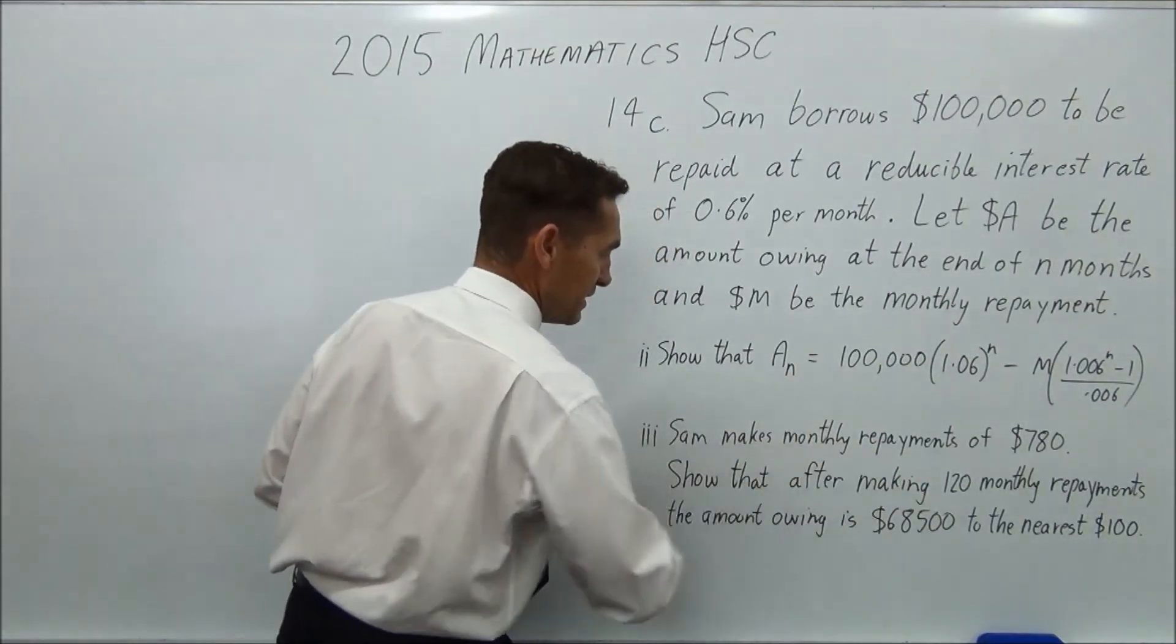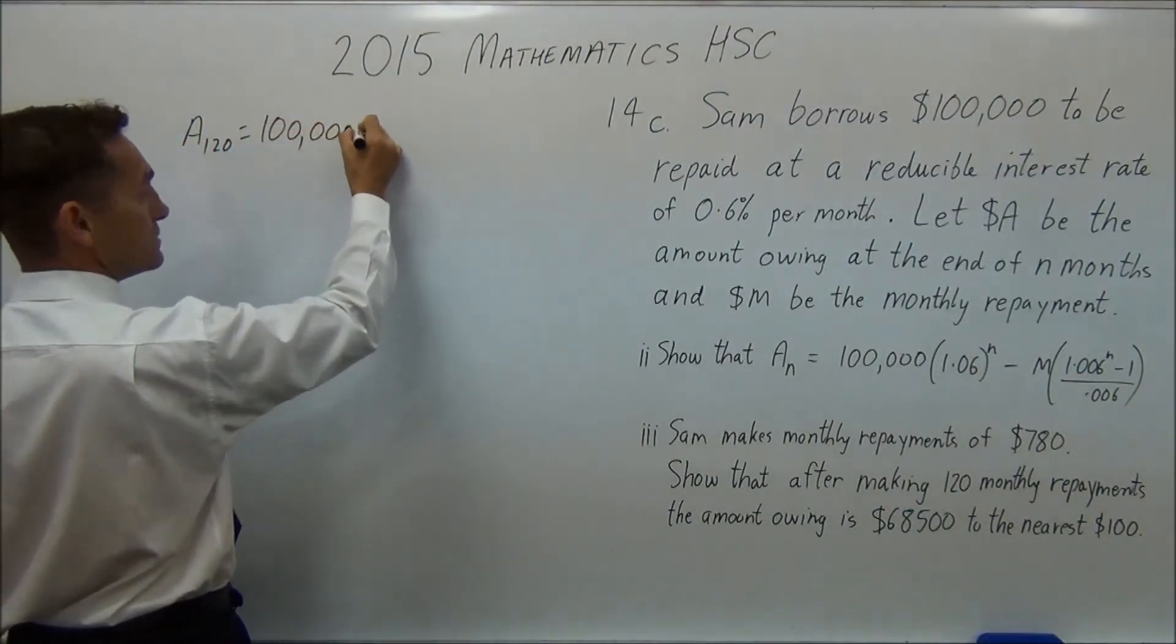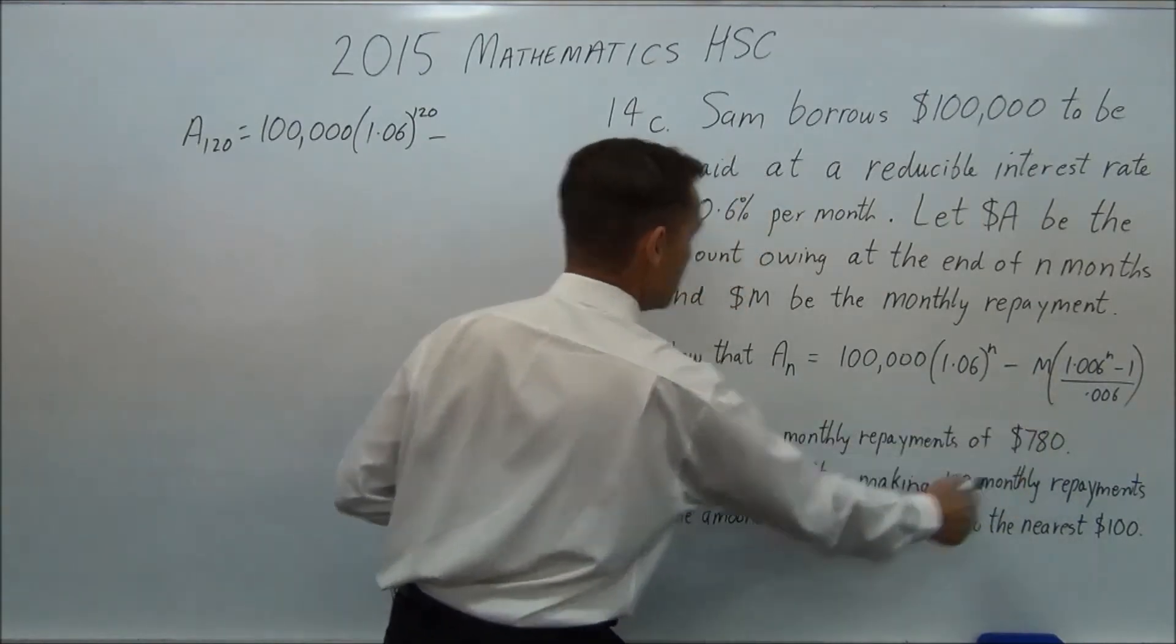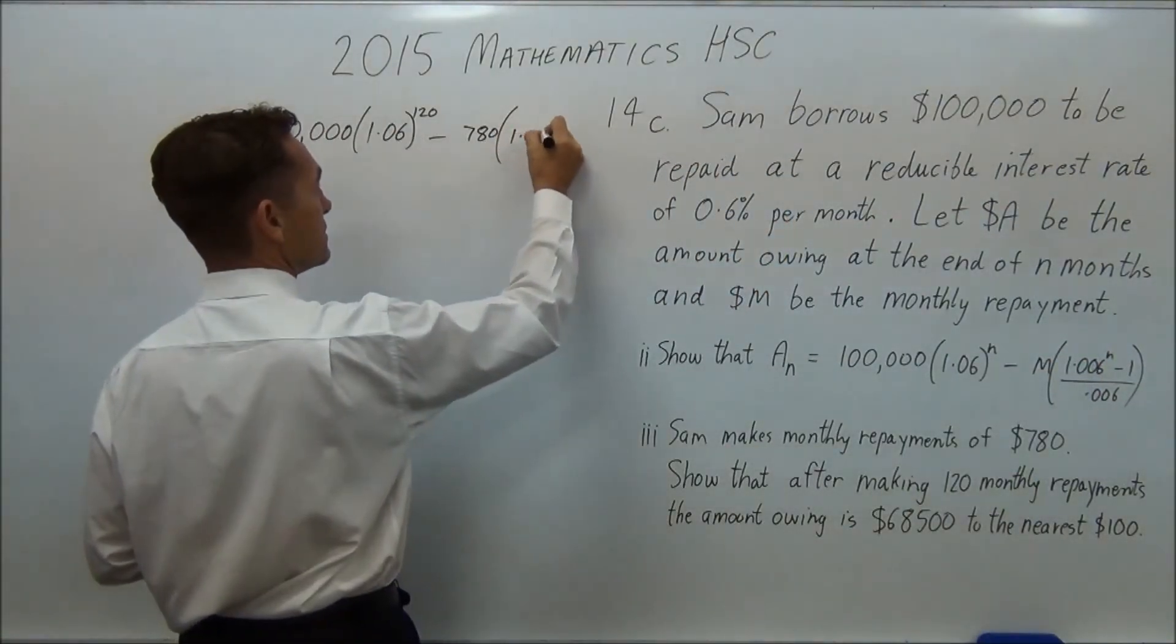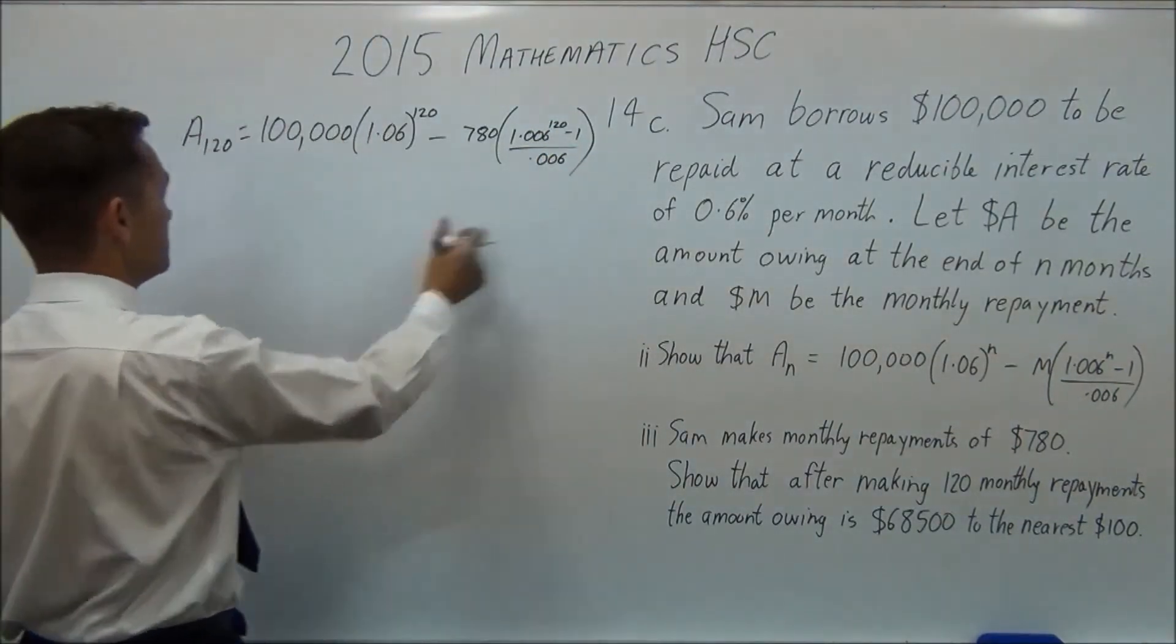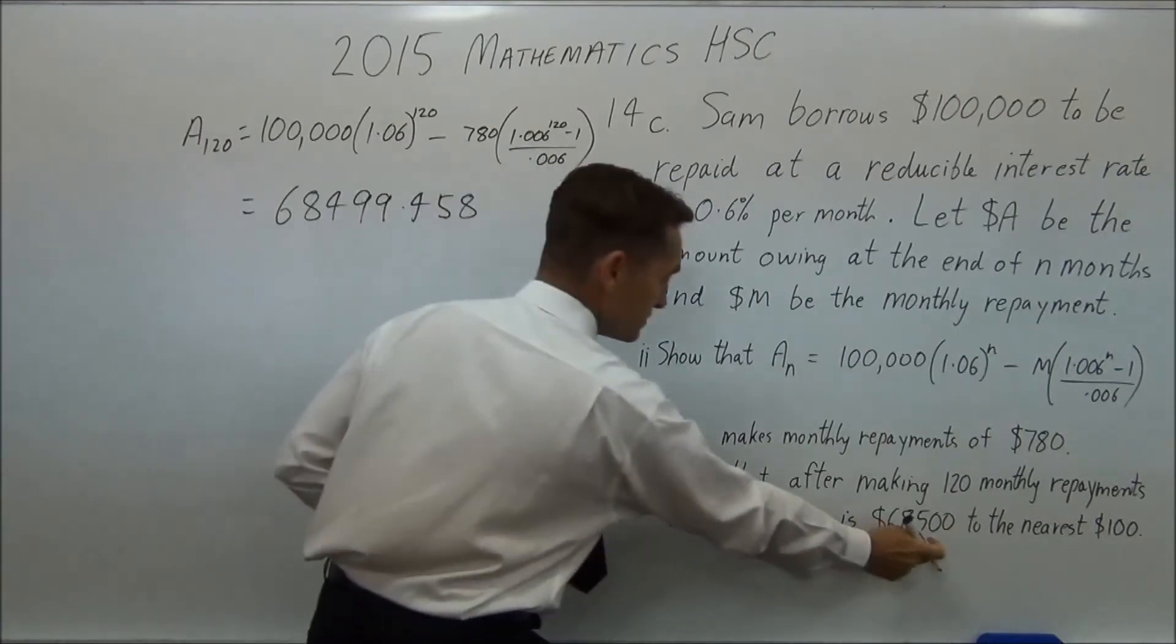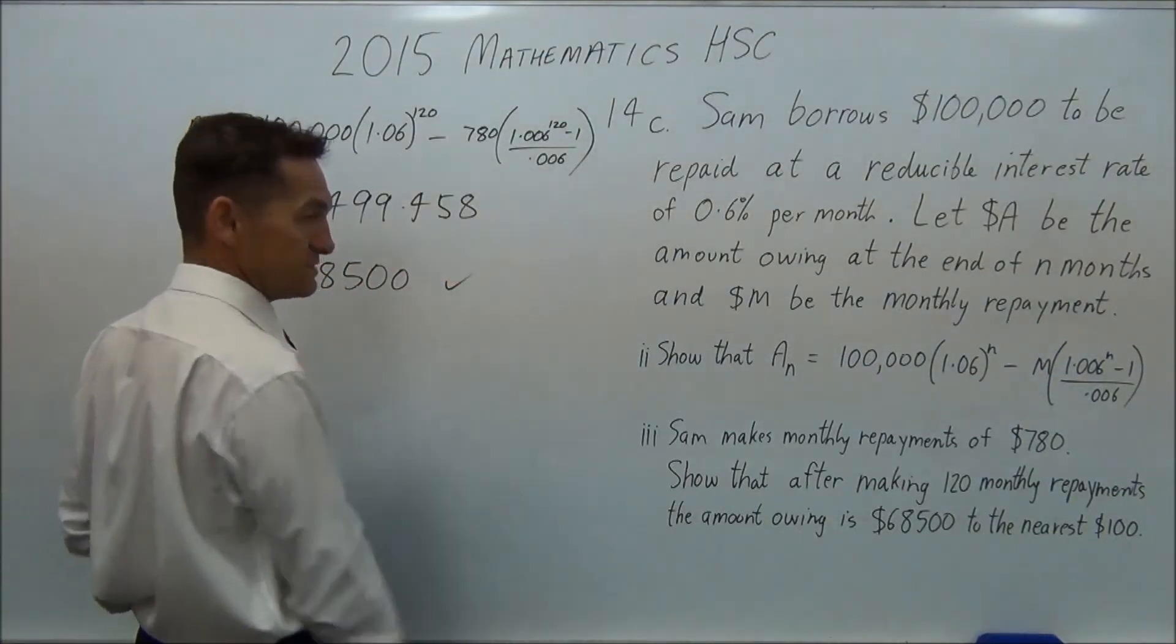So we want 120, so that's our N. So we're going to go A120 equals 100,000 multiplied by 1.006 to the 120 minus M, so we figured out M is 780. Multiplied by 1.006 to the 120 minus 1, all over 0.006. Punch that in your calculator and you end up with 68,499.458, which to the nearest hundred dollar equals 68,500, and that's it. You're done.